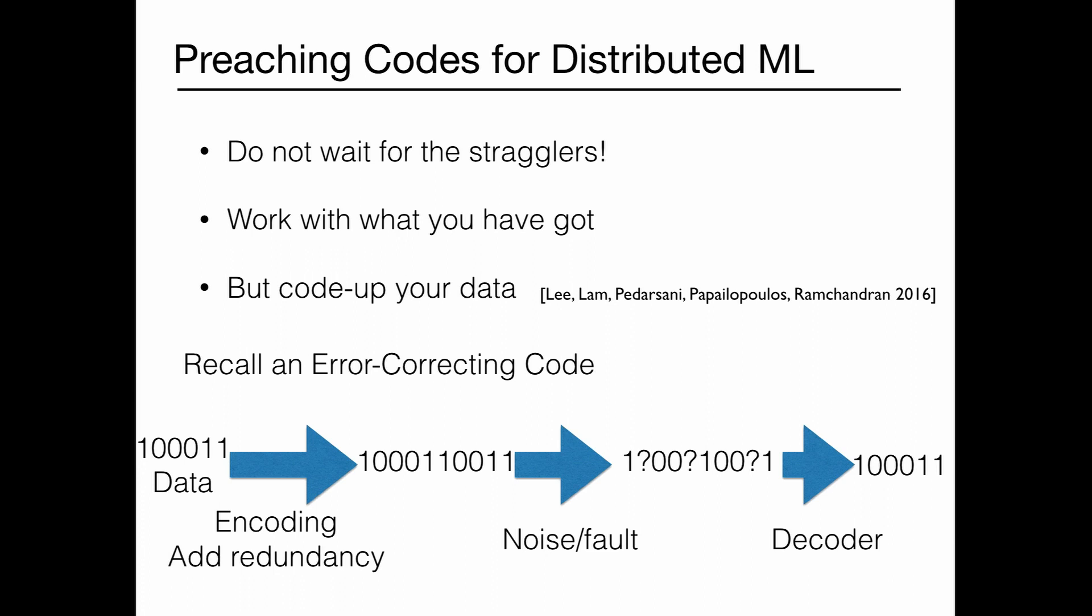Just giving a brief example of what an error correcting code means: you have some data, and you add some redundancy to the end of the data. Like you have this string of zeros and ones, you expand it by adding redundancy. If there's some unavailability in the data, some errors, you can use a decoder, use that redundancy to build back your data. That's an error correcting code. There are various families available, so before you send your data to servers, you just code it up.